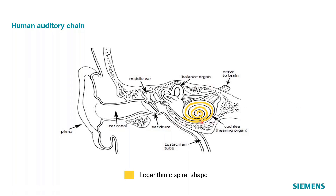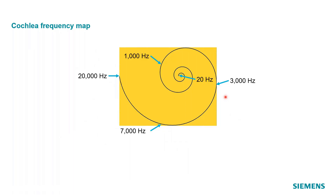The cochlea has a logarithmic spiral shape to it. You have all these nerves that touch the cochlea, and these auditory nerves go to the brain. This is how processed information from the cochlea gets sent to the brain and we perceive it as sound. If we take a closer look at this cochlea, we have a nice logarithmic spiral shape. If we map out the different frequency ranges of the cochlea, the very tip would be 20 kilohertz, and we go down in frequency as we move around the spiral, with the low frequency end on the inside of the spiral.